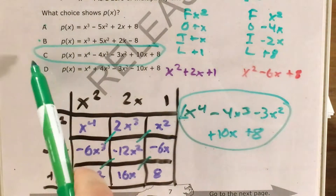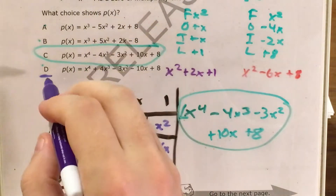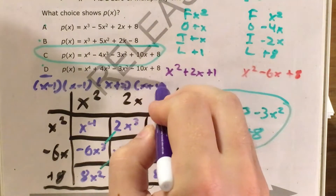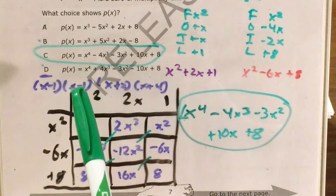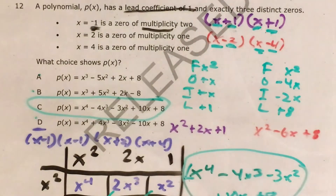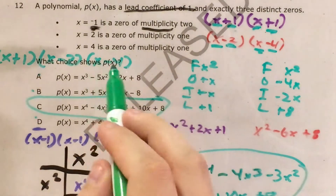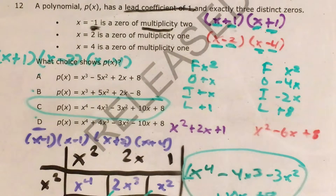Each of the other three answer choices comes from making a specific mistake. Choice D you get by forgetting to flip the signs — if you did x minus 1 times x minus 1 times x plus 2 times x plus 4, that gives you choice D. Choices A and B you could get by forgetting that negative 1 was a zero of multiplicity 2, so if you only used x plus 1 once instead of twice — just x plus 1 times x minus 2 times x minus 4 — that gives you A or B depending on whether you also flipped the signs. North Carolina loves putting these trick answers in their questions, and I personally think it's very mean. But that's what they do, so we gotta deal with it.